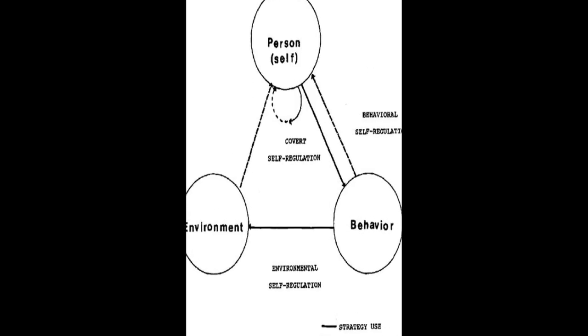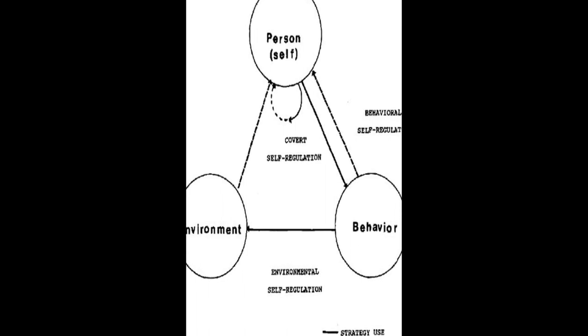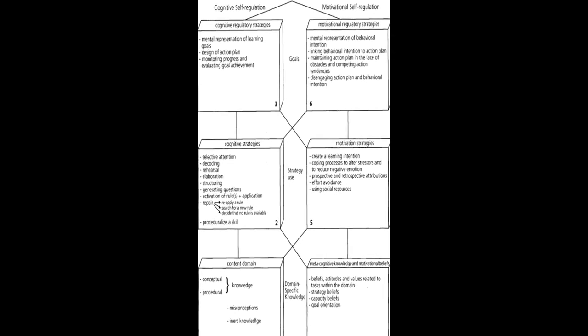The models are then compared in terms of phases and subprocesses, how they conceptualize metacognition, motivation, and emotion, top-down/bottom-up, automaticity, and context.